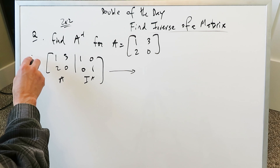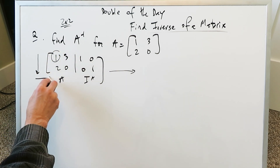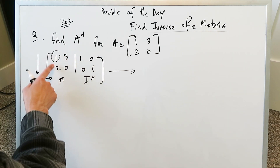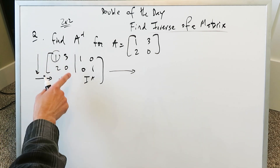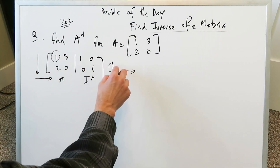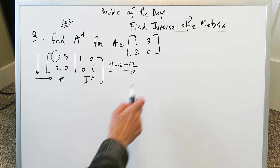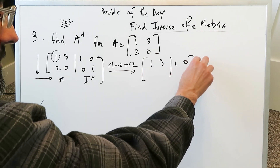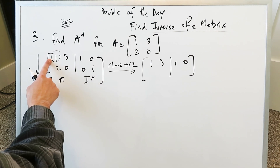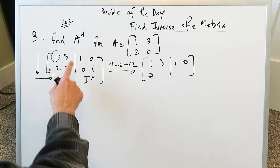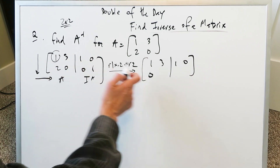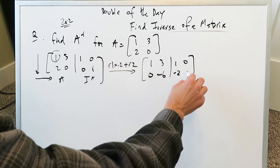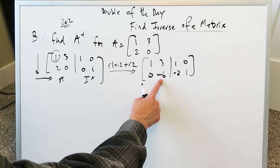You have to do a series of steps, working downwards and across. I see a one in position one-one so nothing needs to be done there, but I need a zero below it. I'll apply this rule: row one times minus two plus row two. One times minus two plus two gives zero. Three times minus two plus row two gives minus six. One times minus two plus zero is minus two, and zero times minus two plus one is one. I've gotten a one and zero in the left column.